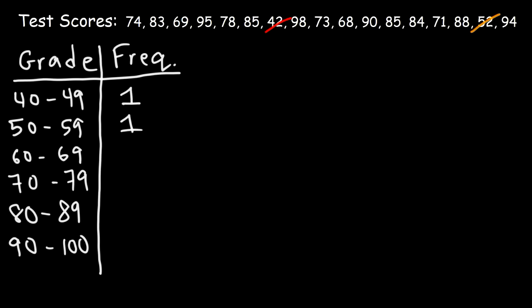How many students received a score between 60 and 69? We have 2 students who received a score in that range. Now in the 70s, we have 1, 2, 3 — so 4 students received a grade between 70 and 79. Then 5 students scored between 80 and 89. And finally, 4 students received an A, or scored 90 or more.